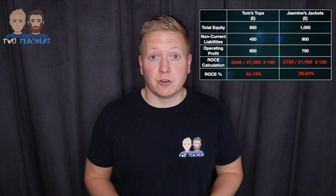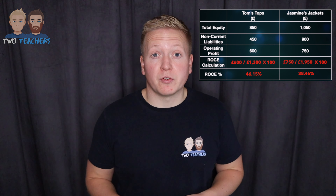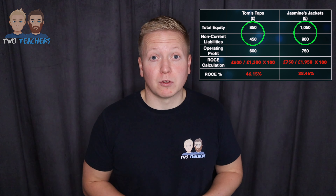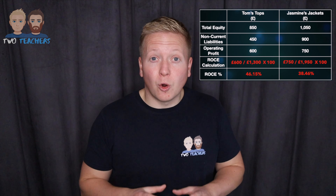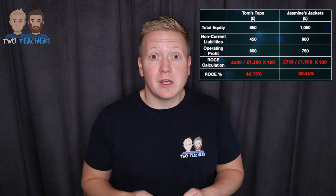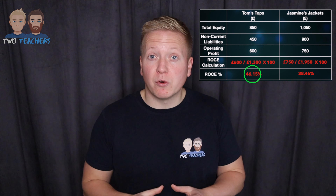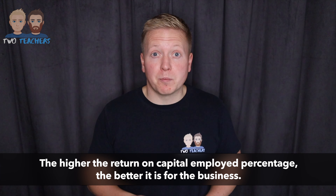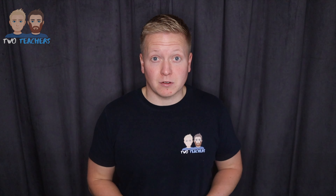Moving on to Jasmine's Jackets on the right, who has an operating profit of £750. Just like we did for Tom's Tops, we need to calculate the capital employed figure separately. That's total equity of £1,050 plus non-current liabilities of £900, which gives us a capital employed figure of £1,950. So for Jasmine's Jackets, that's £750 divided by £1,950 multiplied by 100, meaning the business has a return on capital employed of 38.46%. For every £1 of capital invested into Jasmine's Jackets, the business is returning 38.46p of profit.